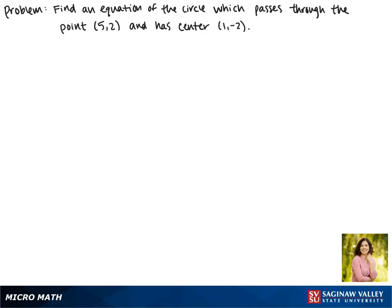Today we'll be finding an equation of the circle which passes through the point (5,2) and has center (1,-2). Remember that the standard form of an equation of a circle is (x - h)² + (y - k)² = r², where (h,k) is the center and r is the radius.